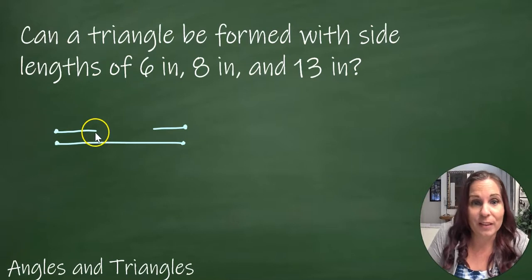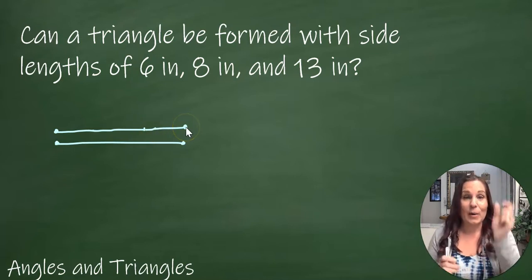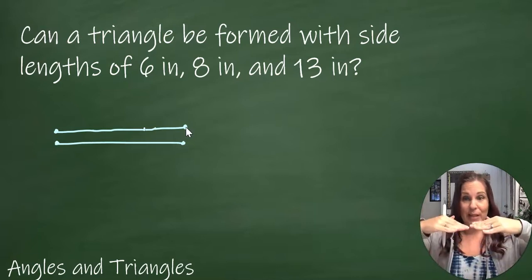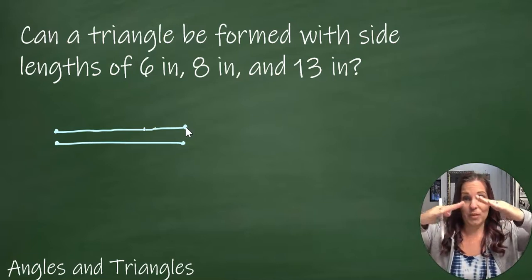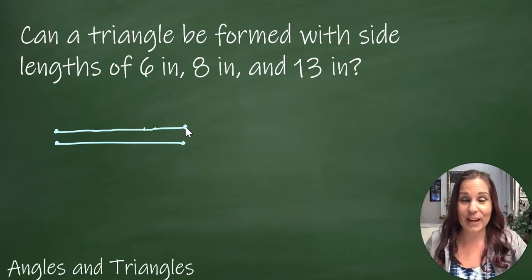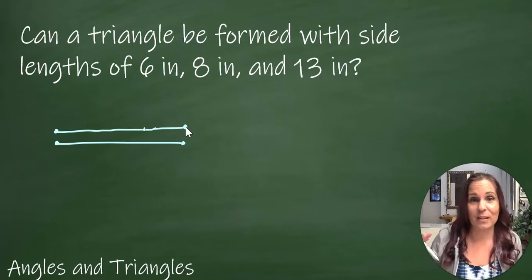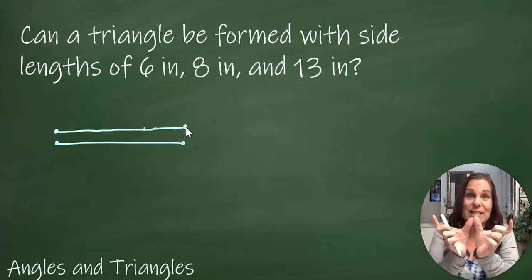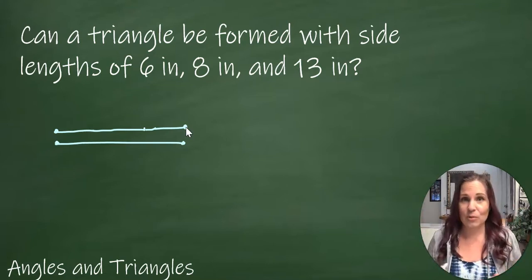What if they're equal? So what if I make this one longer and I make this one longer, and now when I add up the other two sides, now it's the same as the third side. So that looks better. But now when I start to open those sides up to form a triangle, they're not going to touch at the top. I can't get a triangle from that.